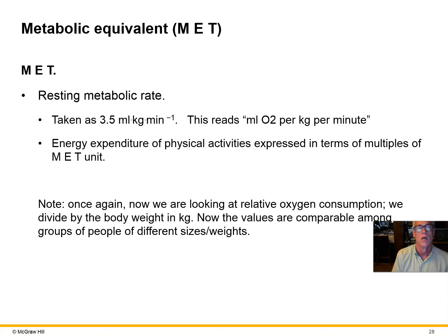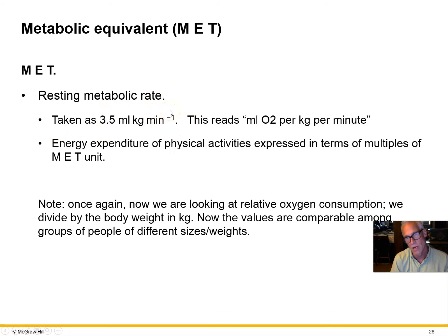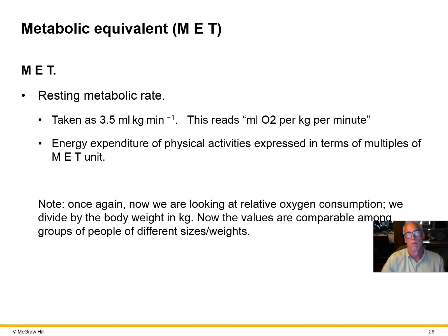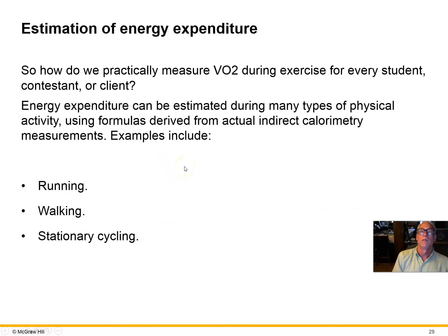Another way of expressing oxygen consumption is by the number of times more energy we're consuming than we would be at rest — just sitting around. The resting metabolic rate is approximately 3.5 milliliters of oxygen per kilogram per minute — we call that one MET. So if a particular exercise rate represents five METs, that's five times the 3.5 mL/kg/min resting oxygen consumption or energy expenditure.